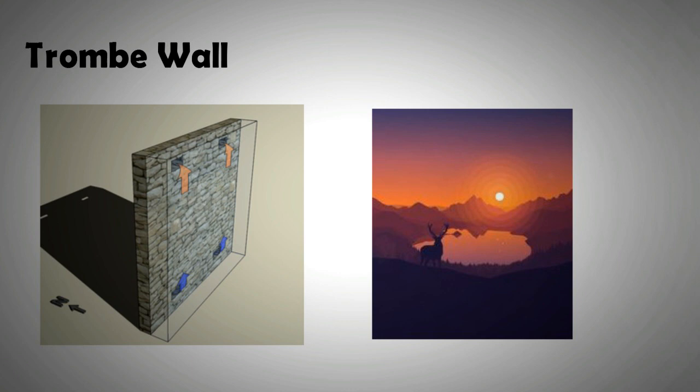The sun rays pass through the glass and are absorbed by the wall. The wall then re-radiates the energy it has soaked up. However the re-radiated energy has a very low wavelength which is bounced back by the glass wall. As a result the heat remains inside the building.